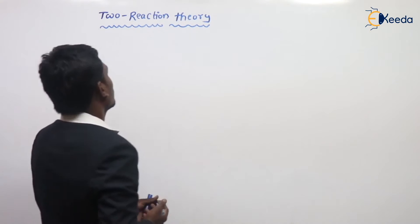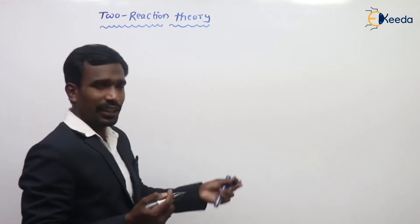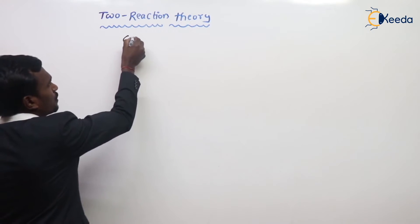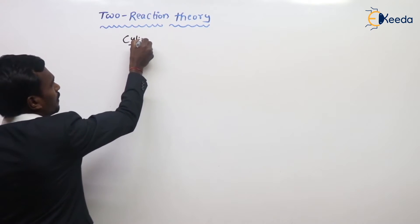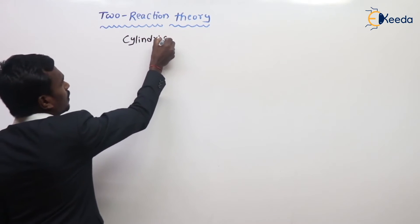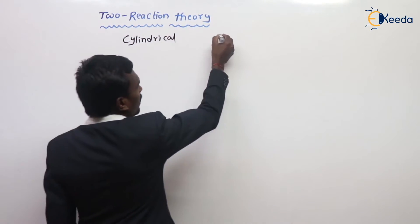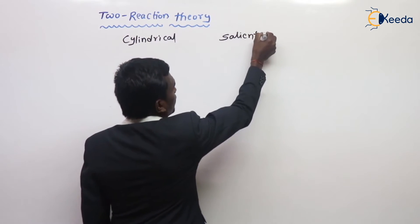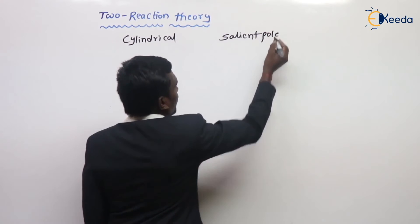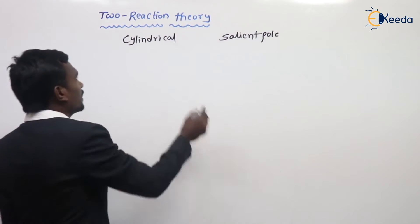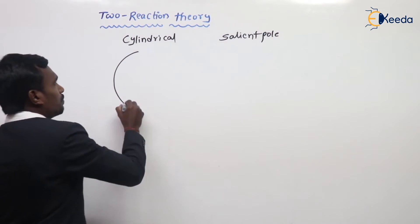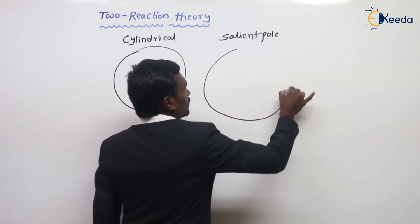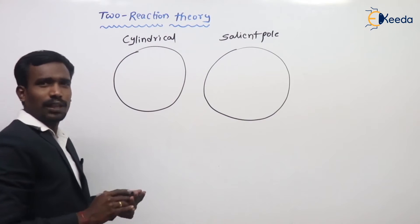Here, the two-reaction theory. First, I am going to take a cylindrical machine — cylindrical rotor and salient pole. Salient pole rotors are here. For example, this is my cylindrical rotor and this is my salient pole rotor.